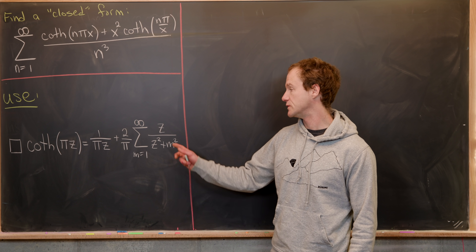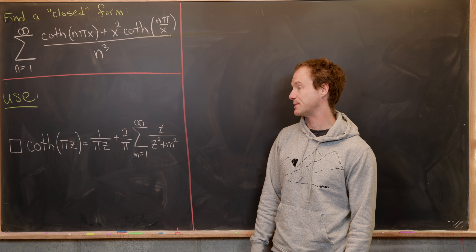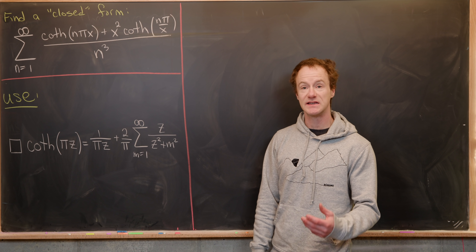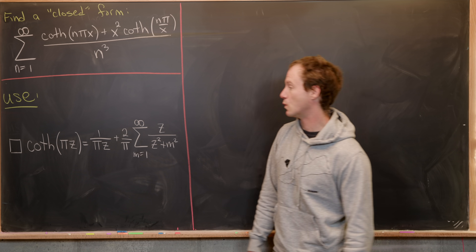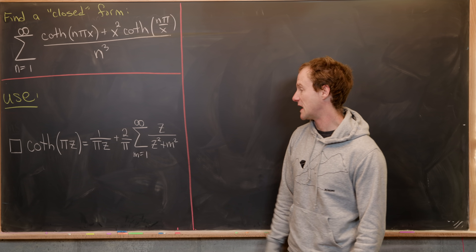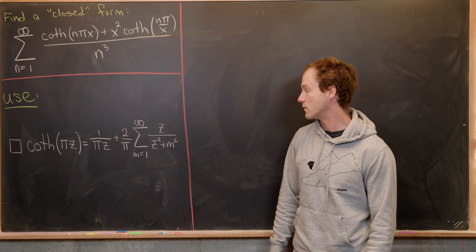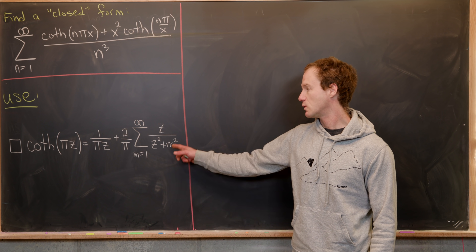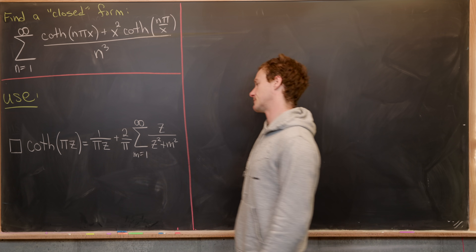In our work, we'll use the following series expansion of the hyperbolic cotangent: the hyperbolic cotangent of pi*z equals 1 over pi*z, plus 2 over pi times the sum as m goes from 1 to infinity of z over z squared plus m squared. We'll actually derive this, so let's get to it.